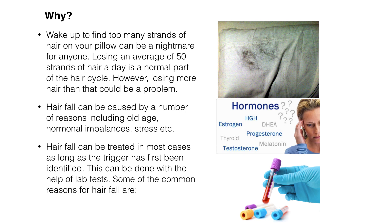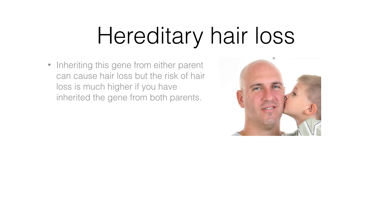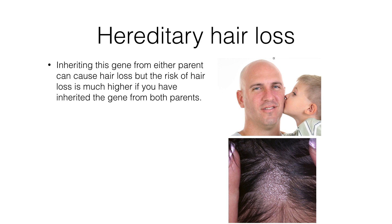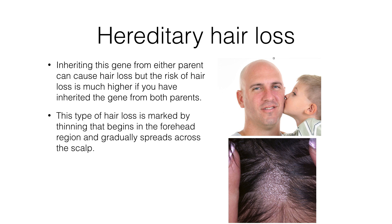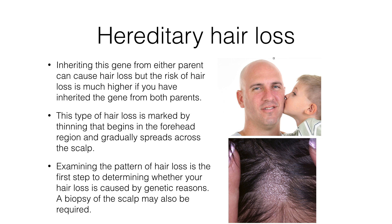Number 1: Hereditary hair loss. Inheriting this gene from either parent can cause hair loss, but the risk is much higher if you have inherited the gene from both parents. This type of hair loss is marked by thinning that begins in the forehead region and gradually spreads across the scalp. Examining the pattern of hair loss is the first step, and a biopsy of the scalp may also be required.